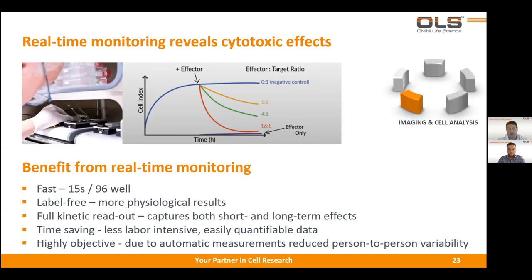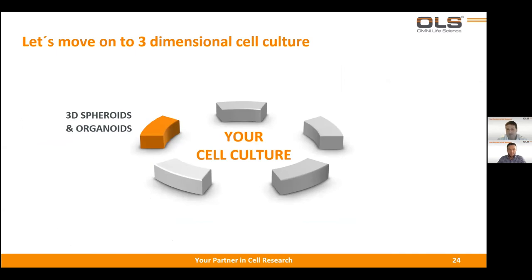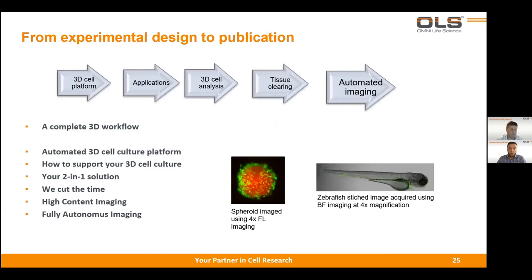We've covered information about 2D monolayer cell culture, cryopreservation, cell counting, and imaging. Now let's move on to three-dimensional cell culture — a really big and important topic — and Amir will tell you about this. Thank you, Markus. Now moving to the 3D cell culture topic, I would like to speak more about automated platforms for cultivating 3D cell structures, how to monitor them, how to clear those tissues, and how to image them with advanced high-content imaging systems or a fully automated platform for screenings.